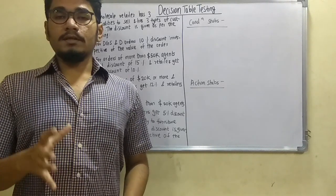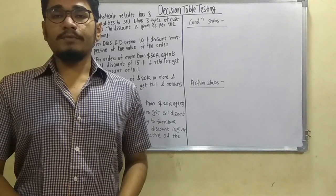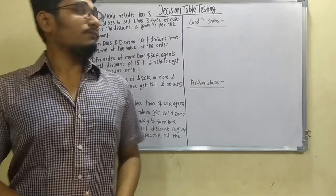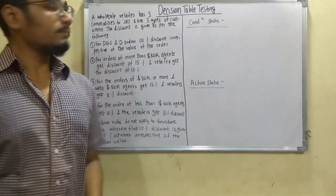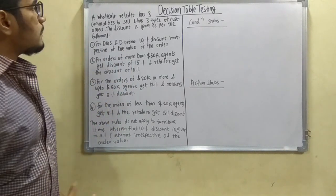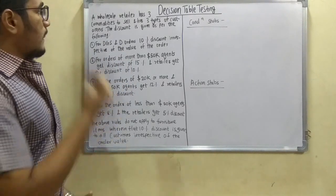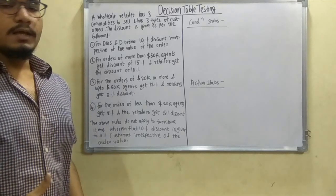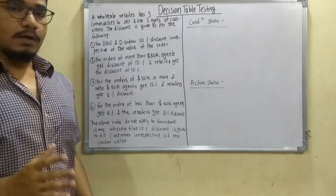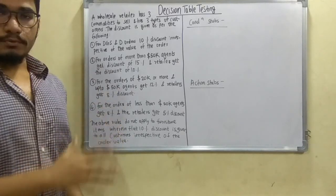It is a bit complicated problem and it will take a considerable amount of time. So with no time wasted, we will start. The problem reads that a wholesale retailer has three commodities to sell and has three types of customers. The discount is given as per the following procedures.